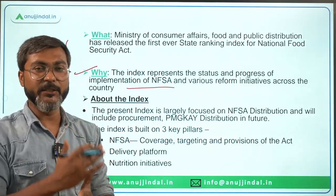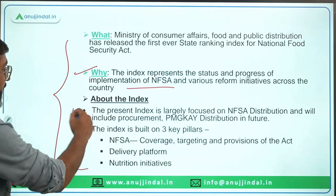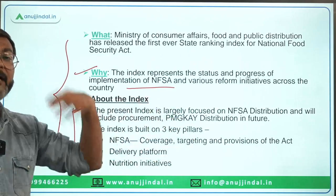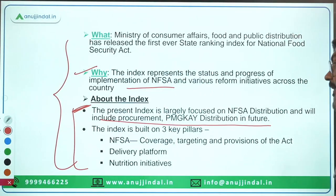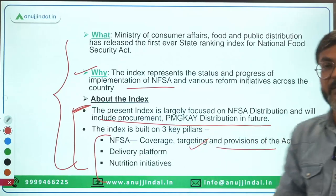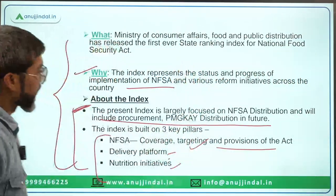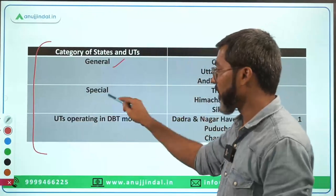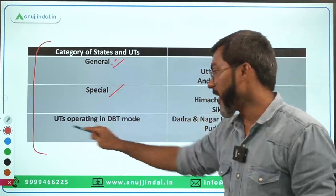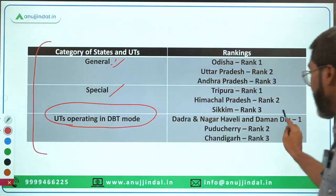This index is largely focused on NFSA distribution, and in future it will include procurement and Pradhan Mantri Garib Kalyan Anna Yojana distribution as well. It is built on three pillars: first, NFSA coverage, targeting and provisions of the Act; second, delivery platform; and third, nutrition initiative. States are categorized into three parts: general states, special states and UTs, and UTs operating in DBT mode. The UTs operating in DBT mode are Dadra and Nagar Haveli, Daman and Diu, Puducherry, and Chandigarh.